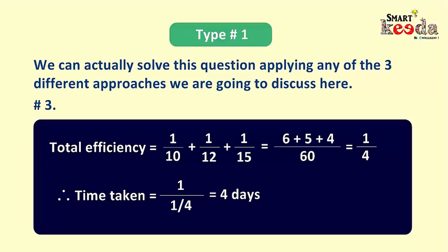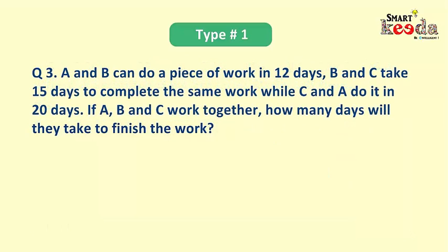Now let's take the third variant of Type 1 questions: A and B can do a piece of work in 12 days, B and C take 15 days to complete the same work, while C and A do it in 20 days. If A, B, and C work together, how many days will they take? This is similar to the previous question — the difference is each person is working with each of the other two simultaneously.